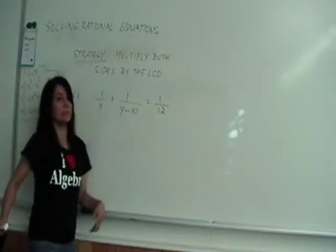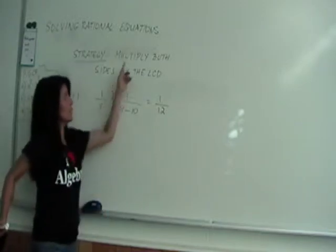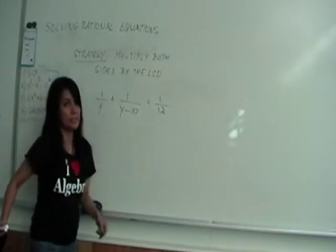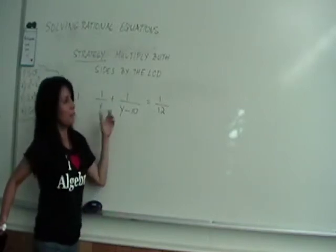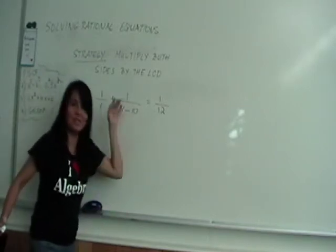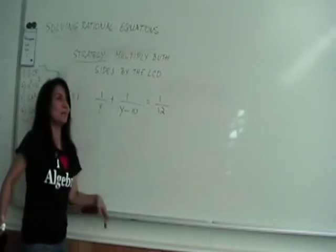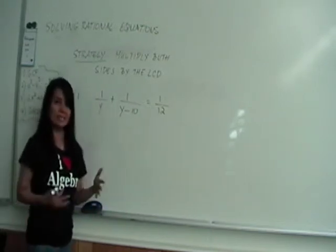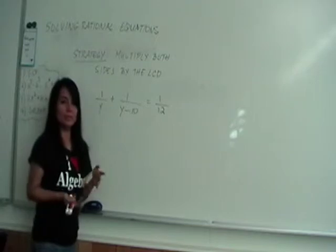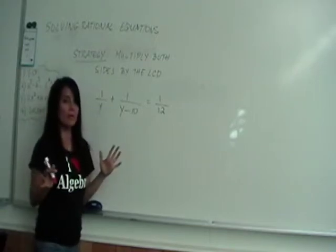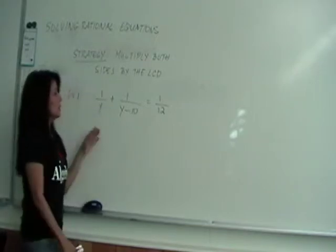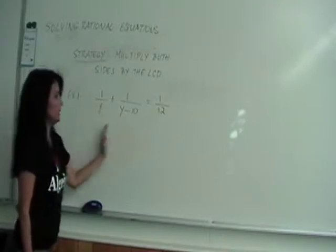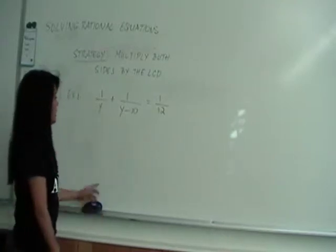Rational expressions look like fractions, so it's basically the same idea — you want to kick them out from the start. Let's look at a simple example of a rational equation.